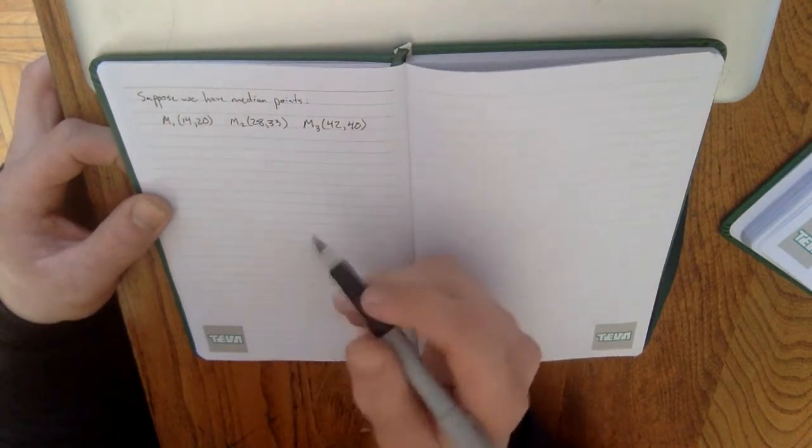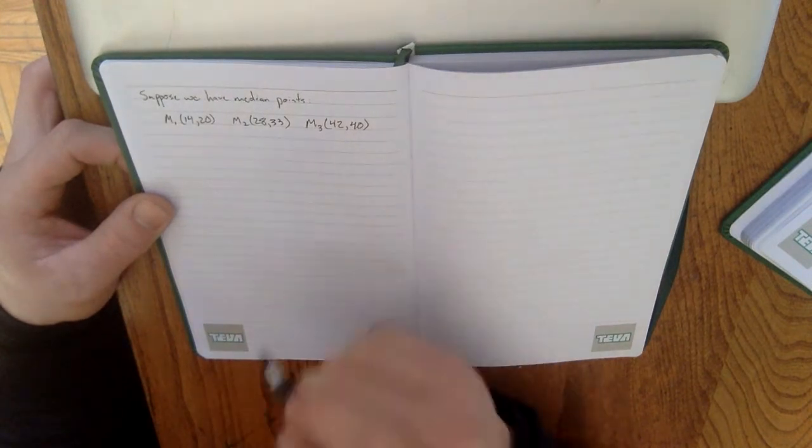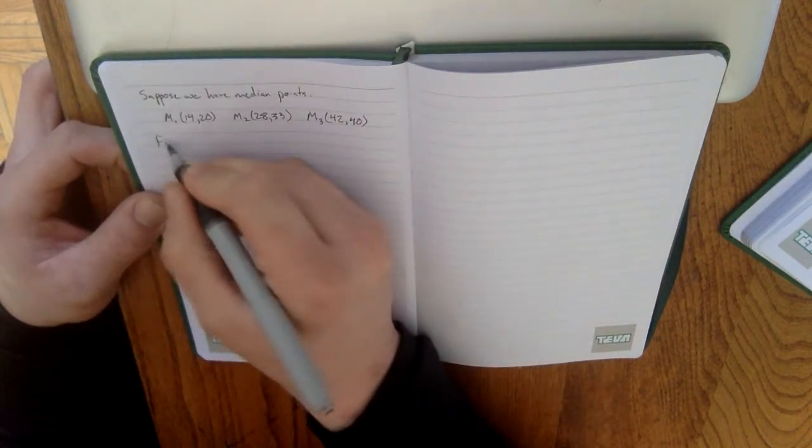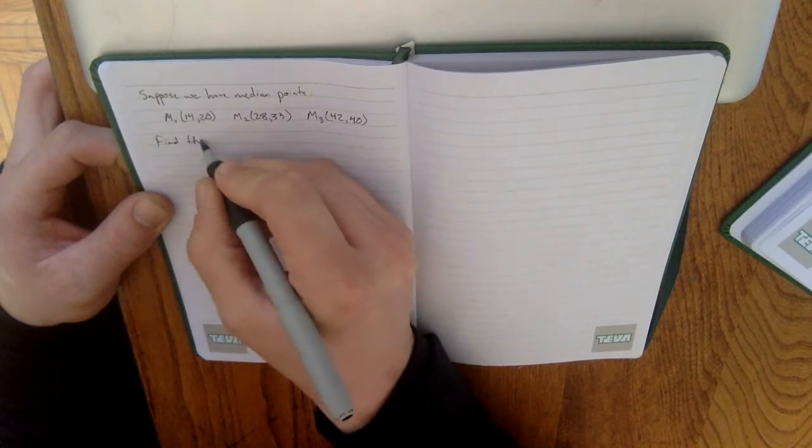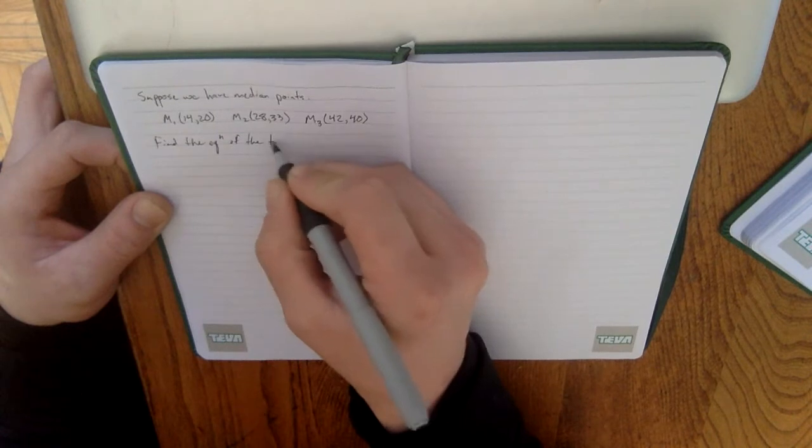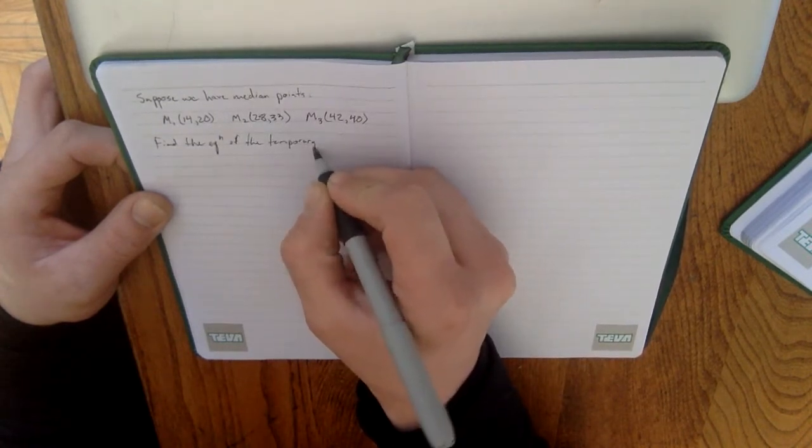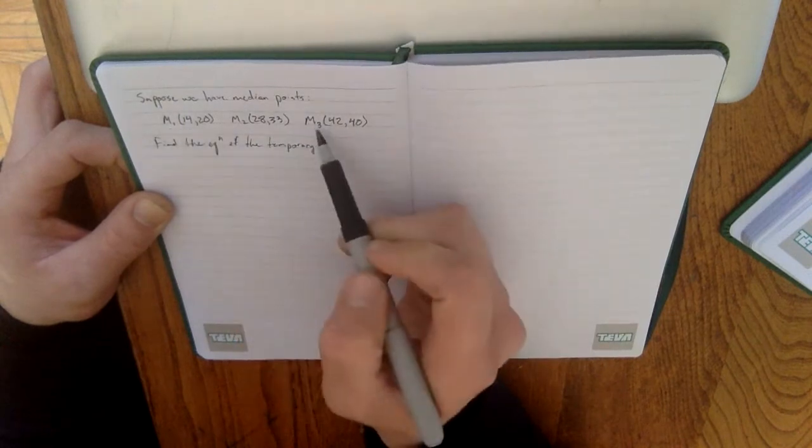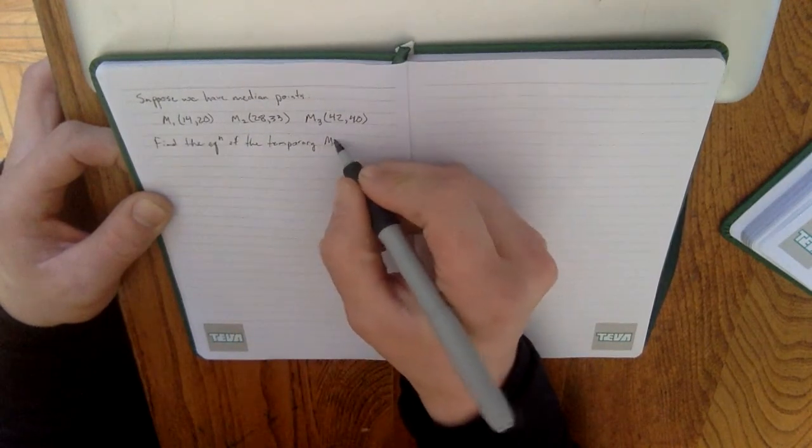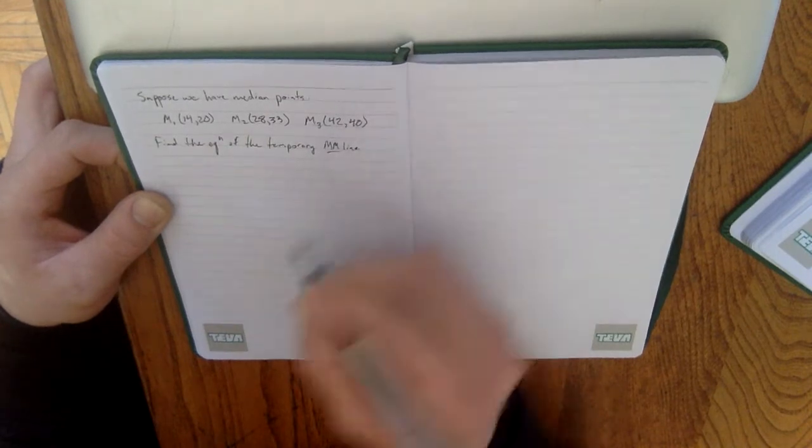If we had to find the equation of the median-median line algebraically, the first thing we would have to do is find the equation of the temporary line. Now, the temporary line is the line that connects points M1 and M3. I'm just going to call this the temporary MM line, where MM is median-median.